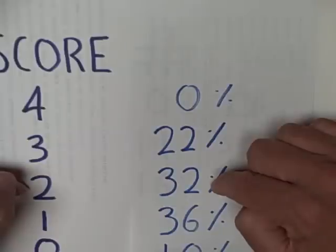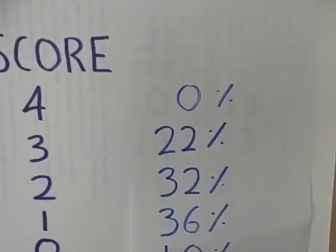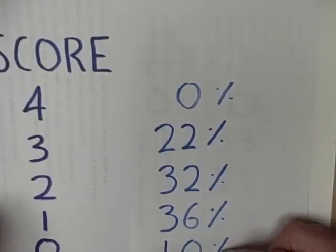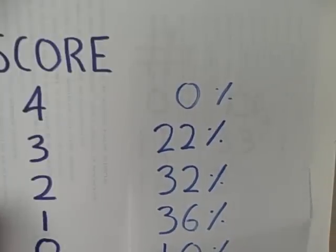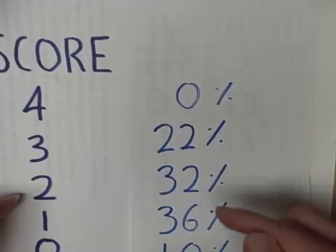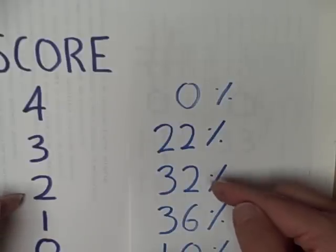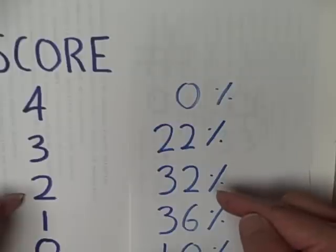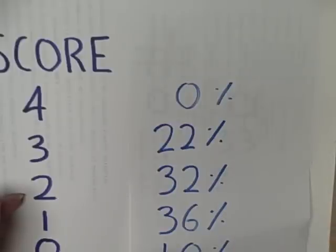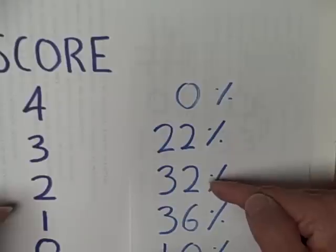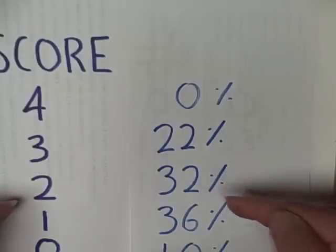But if you come at it from the other direction, from bottom to top, you get the same thing. If you look at the people who scored a 0, that's only 10%. Add in the 36% who scored a 1, that's only 46%. We still haven't crossed the halfway mark. We have to go up to the score of 2 and add in the 32% here. And now we will get a total of 78%. We've crossed that 50% line.